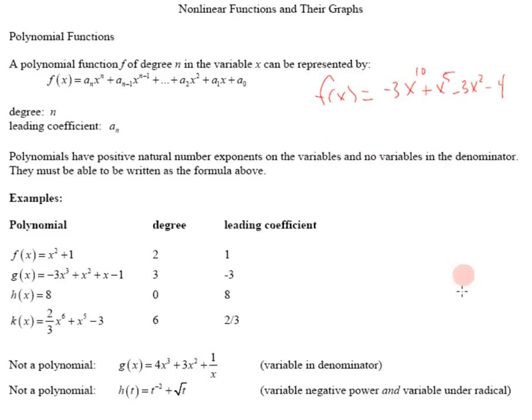So while we are talking about that, look right down here. This is not a polynomial because of this variable in the denominator. And this one is not a polynomial either for two reasons. It has a negative power and it has a square root of a variable. Remember the square root of t means t to the 1 half. And that's not a natural positive number.